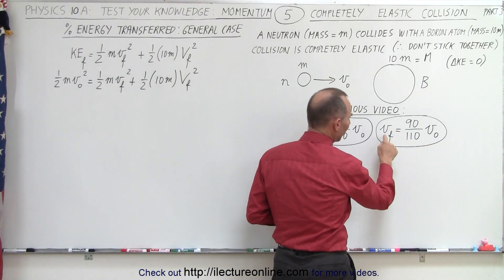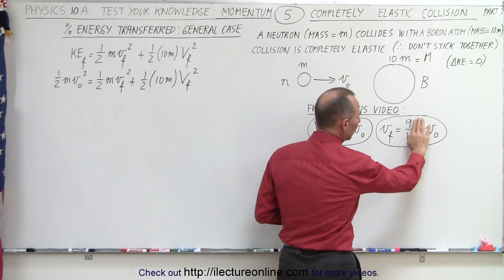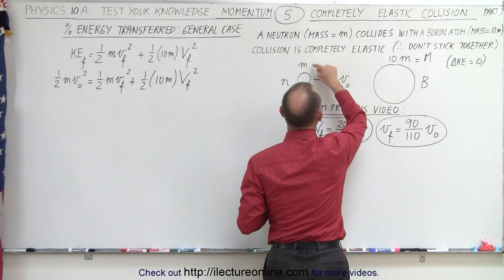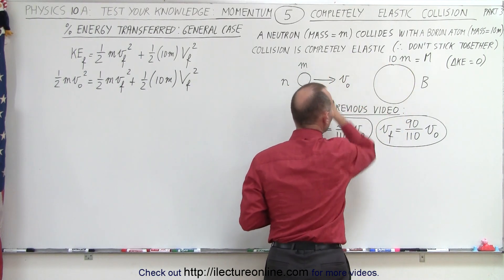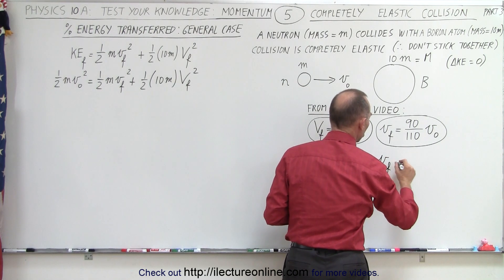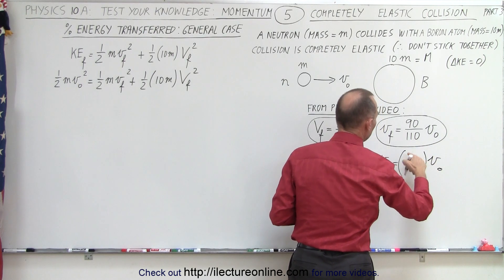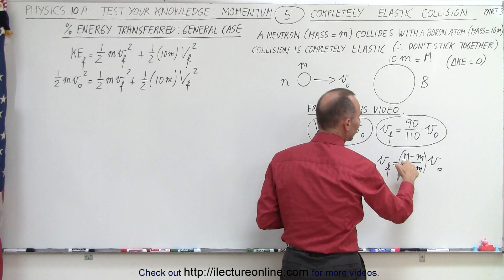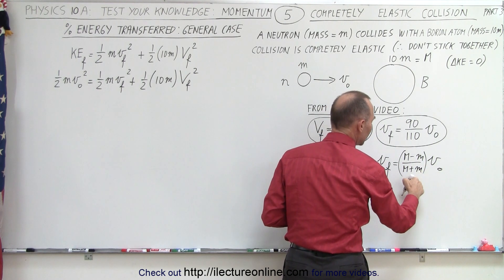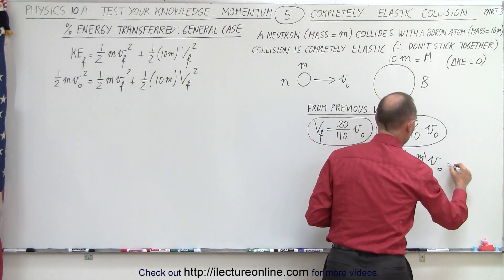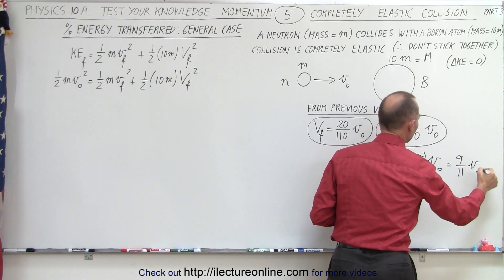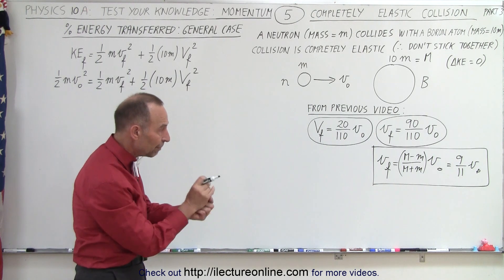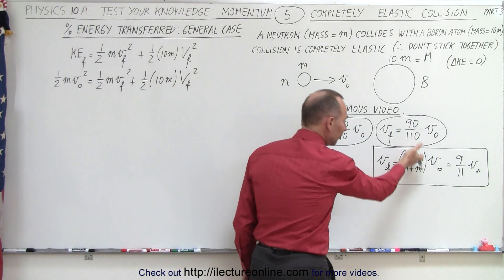Looking at the equation for v_final of the neutron compared to v_initial of the neutron, if we get rid of the zeros we have 9 divided by 11. Looking at the masses, the 9 can be found by taking 10m minus 1m, and the 11 would be 10m plus 1m. So in essence, v_final can be written in terms of v_initial via the ratio of big M minus little m divided by big M plus little m. This gives 10m minus m = 9m over 10m plus m = 11m, the m's cancel, giving 9/11 v_initial, which matches our ratio.